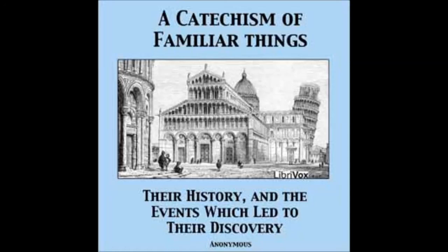Of what form was money generally made? The form of money has been more various than its materials. The ancient Britons used as money rings or bars of iron and tin. The Lacedaemonians used iron bars quenched with vinegar. The money of most nations usually bore an impression peculiar to themselves; for instance, the shekel of the Jews was marked with the golden pot of manna on one side, and Aaron's rod on the other. Other coins bore the figures of animals, etc. In shape, coins were either round, irregular, or square.